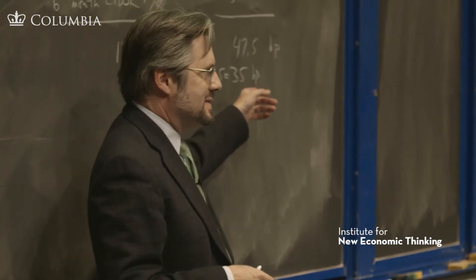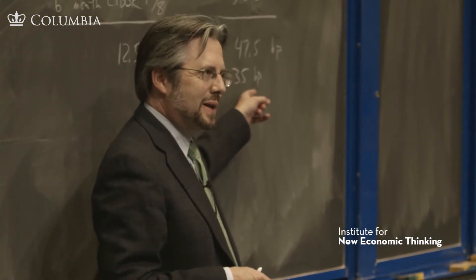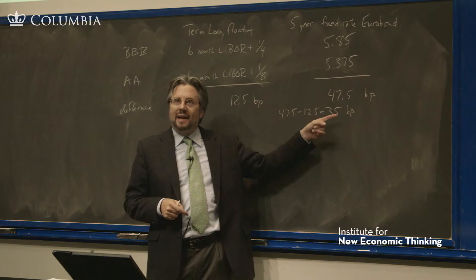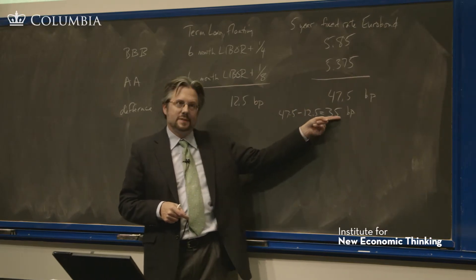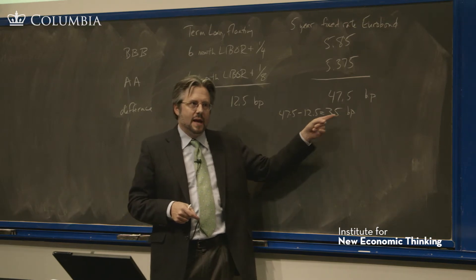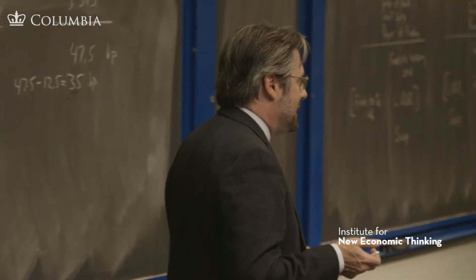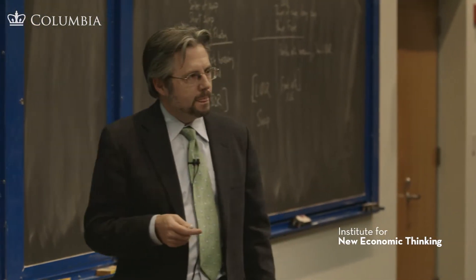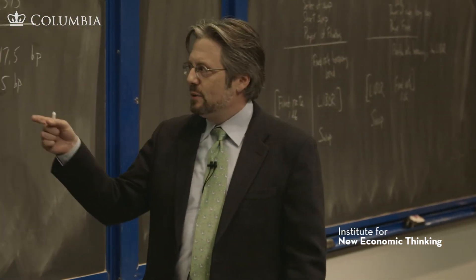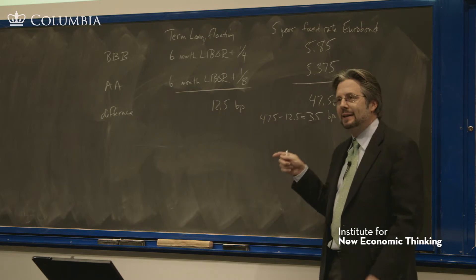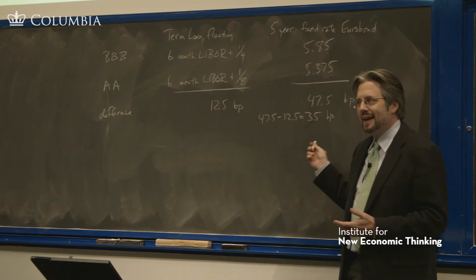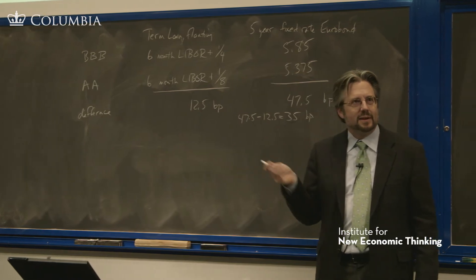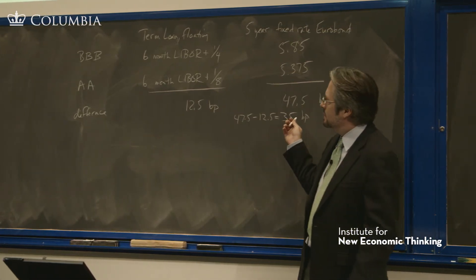I'm going to explain in what sense we have 35 basis points to work with. There is a win-win possibility here because of this 35 basis points. There's a negotiation that's going to take place about who gets those basis points. You would expect that Double A gets most of them if it's the better borrower.